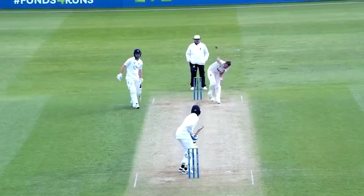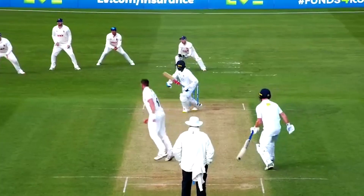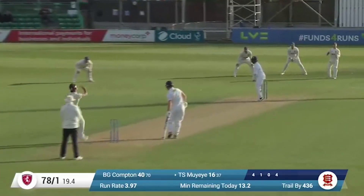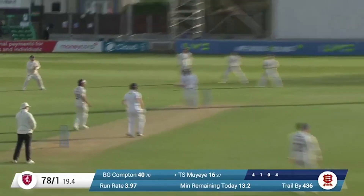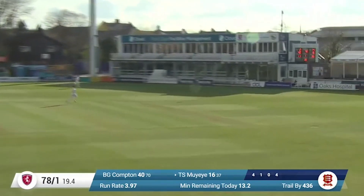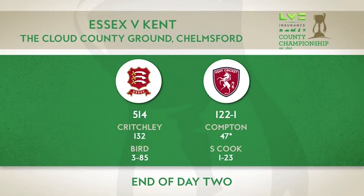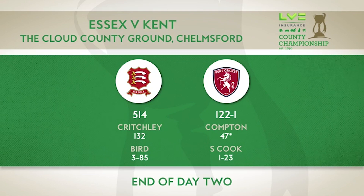Kent got their heads down though, with new man Tawanda Muyeye helping them move past 50 — a particular highlight from the much-fancied 21-year-old dispatching Shane Snater. They'd finish the day on 122 for one, still a long way behind Essex, but a decent start on what looks like a flat surface that the batsmen at the crease will be hoping to take advantage of tomorrow.